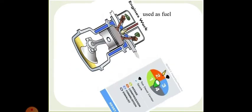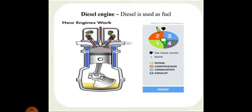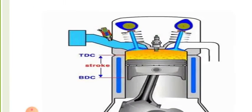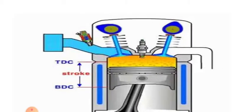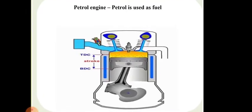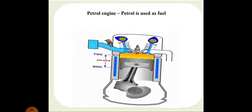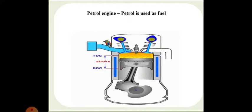This is a diesel engine where diesel is used as fuel. In the petrol engine, petrol is used as fuel — petrol engines are used in automobiles like cars, scooters, and motorcycles. In petrol engines, a spark plug is present, whereas in diesel engines there are no spark plugs. The piston moves from BDC to TDC. One stroke is the movement of the piston from BDC — Bottom Dead Centre — to TDC — Top Dead Centre.